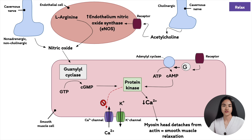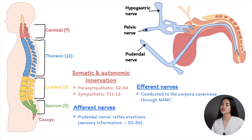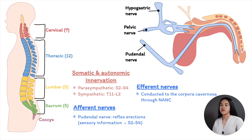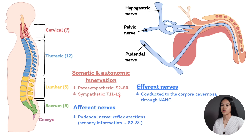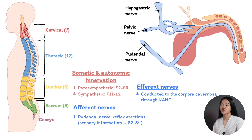Now let's talk about how erection is inhibited — the flaccid state — when the smooth muscle cells contract. Signals from the sympathetic nerves and endothelium activate smooth muscle cells of the penis. The nuclei of the sympathetic neurons are found in T11 to T12. They have short preganglionic fibers and long postganglionic fibers that run through the hypogastric nerve, the pelvic plexus, and the cavernous nerves to the corpora cavernosa, where they inhibit erection.